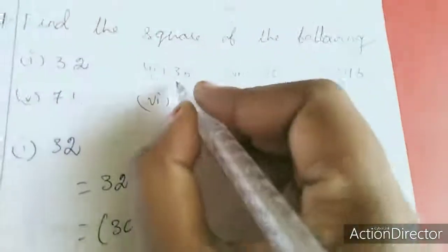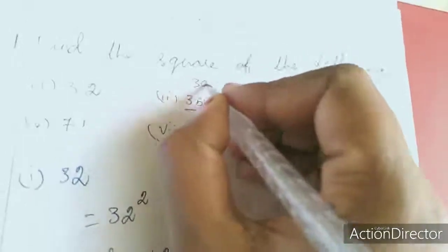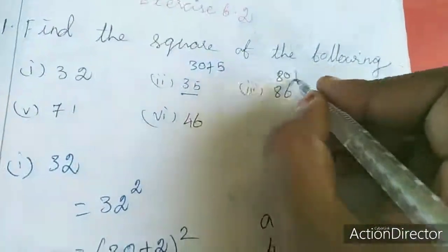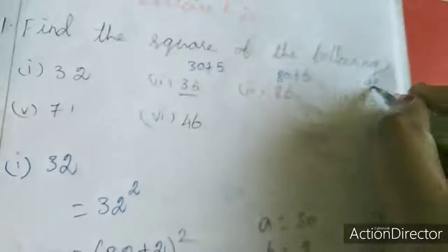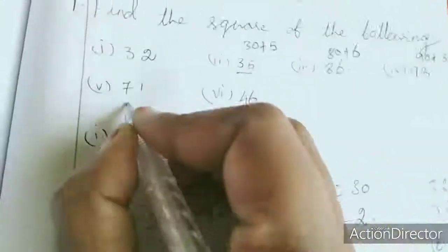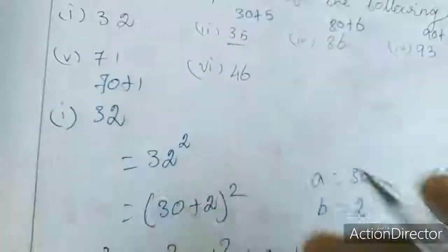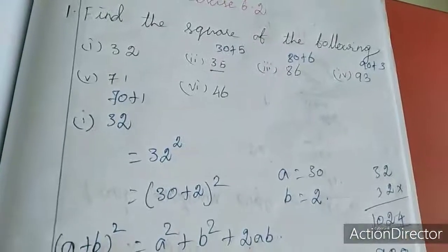Balance is homework for you. 35 you have to split as 30 plus 5, here 86 as 80 plus 6, here 93 as 90 plus 3, 71 as 70 plus 1. Use the formula and find out the answer for the sums.